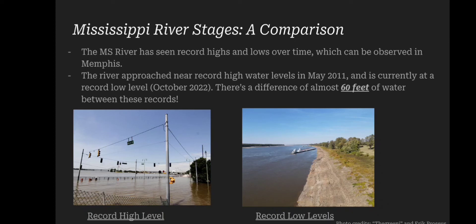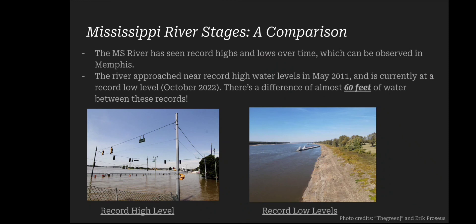Right now we are currently seeing record low levels during October of this year, pictured on the right. There is almost a difference of 60 feet between these two records, which is very amazing to think about. It's incredible to see how drastically water can change a river from looking like the image on the left to how it looks now on the right.